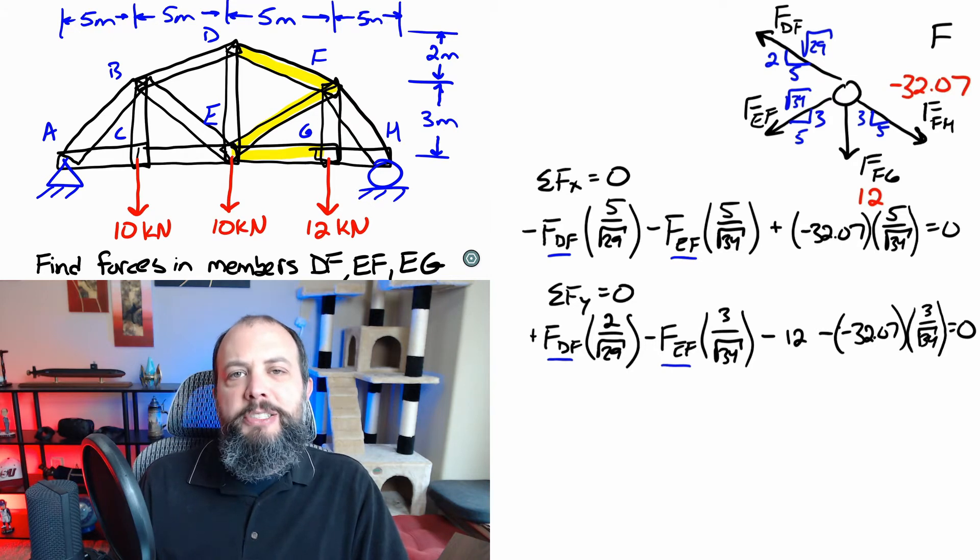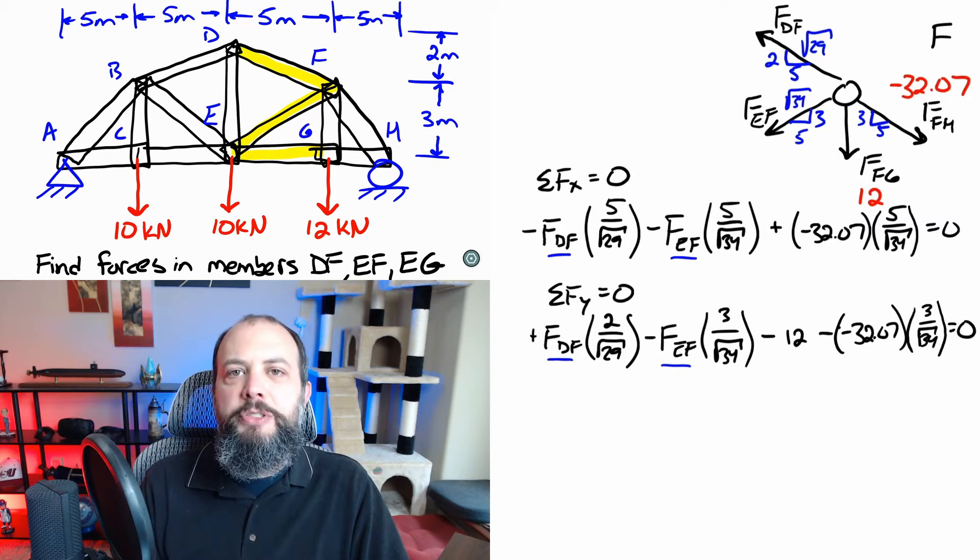The equations look pretty complex and long but a lot of that is just due to the square root sign. This is still just two equations and two unknowns so this is just like all of the simultaneous equation problems you did a couple chapters ago.